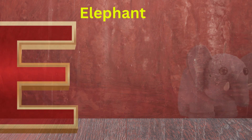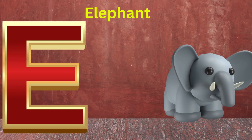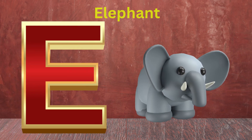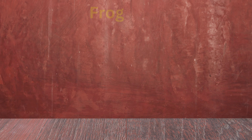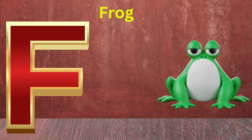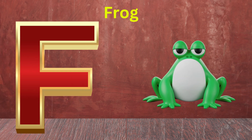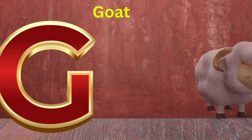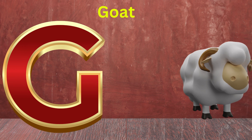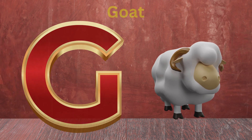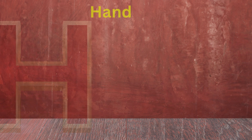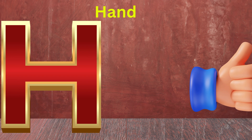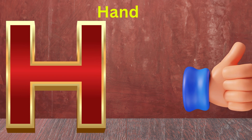E is for Elephant, E-E-Elephant. F is for Fish, F-F-Fish. G is for Godzilla, G-G-Godzilla. H is for Horse, H-H-H-Horse.